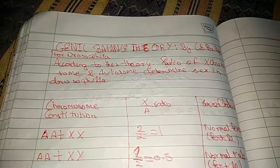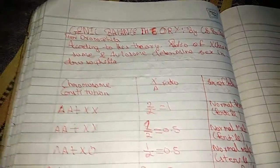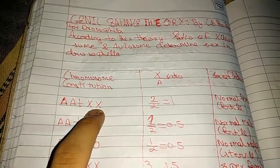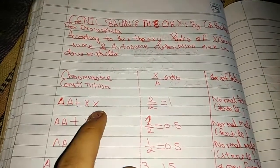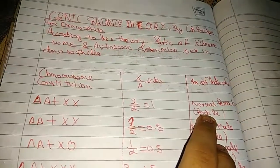Let us see. AA + XX chromosomes in Drosophila: the value of X is 2 by 2 equals 1, normal female, fertile.